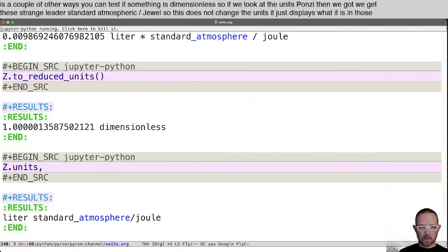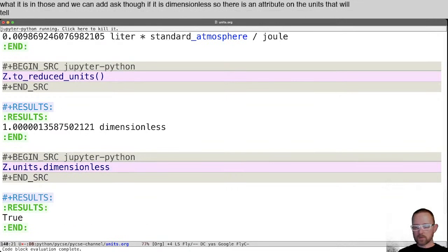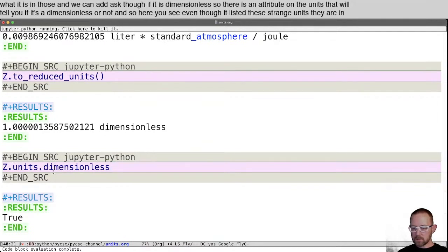And we can ask though, if it is dimensionless. So there is an attribute on the units that will tell you if it's dimensionless or not. And so here you see, even though it listed these strange units, they are in fact dimensionless.